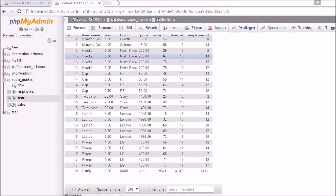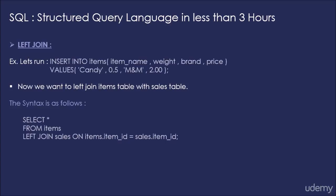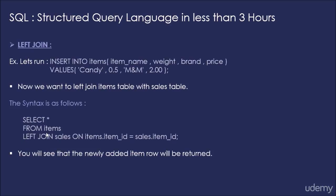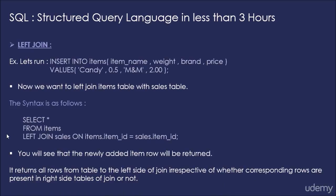Now let's get back to our presentation. We ran the query and as you saw, the new item candy was returned even though there were no sales for candy, because this is a left join and table items is on the left side of the join while table sales is on the right side. Left join returns all rows from table items irrespective of whether or not that particular item had any corresponding rows in the sales table. This is the result of left join and this is how you can use left join.